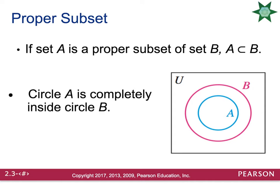You can also have a case where there's a proper subset involved. That means you have two subgroups within the universal set, but one subgroup lies inside of another subgroup. For example, let's say our universal set is food, set B is yummy food, and set A is pizza. If we say all pizza is yummy, then every single type of pizza gets put inside set B for yummy food.